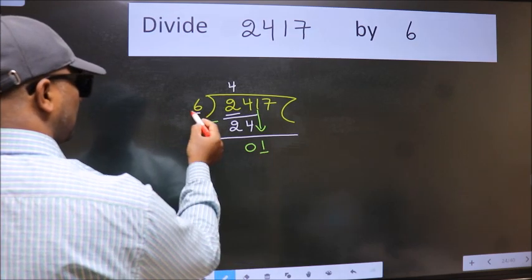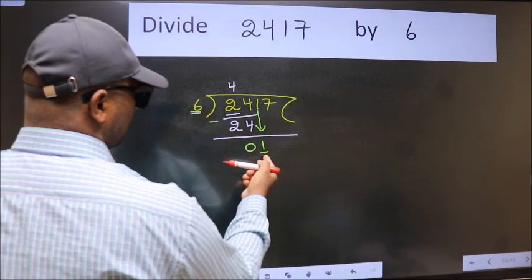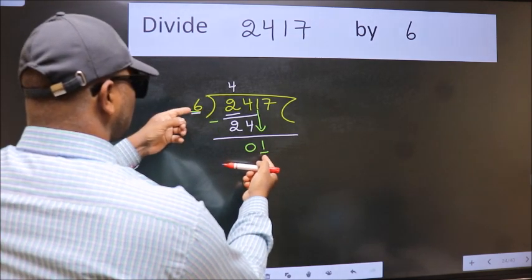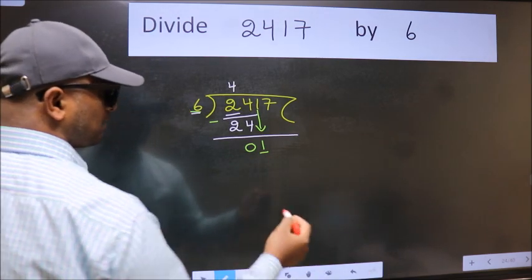Now here we have 1 and here 6. 1 is smaller than 6. So we should bring down the second number.